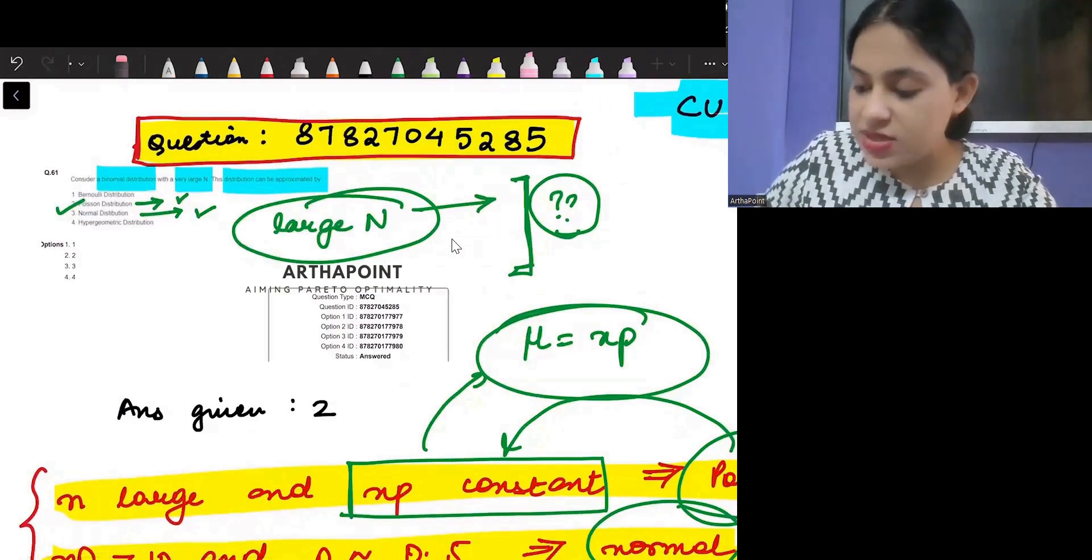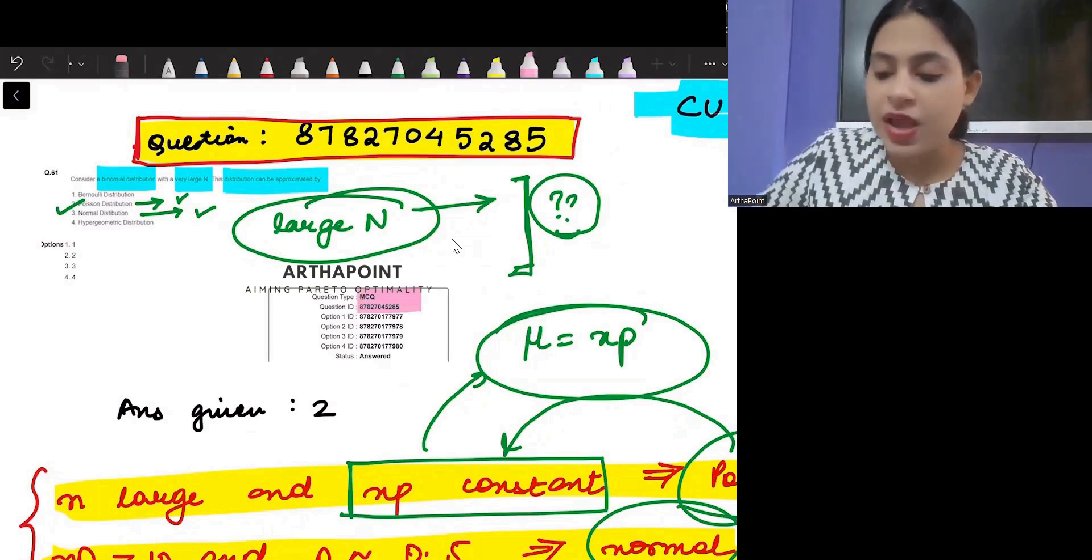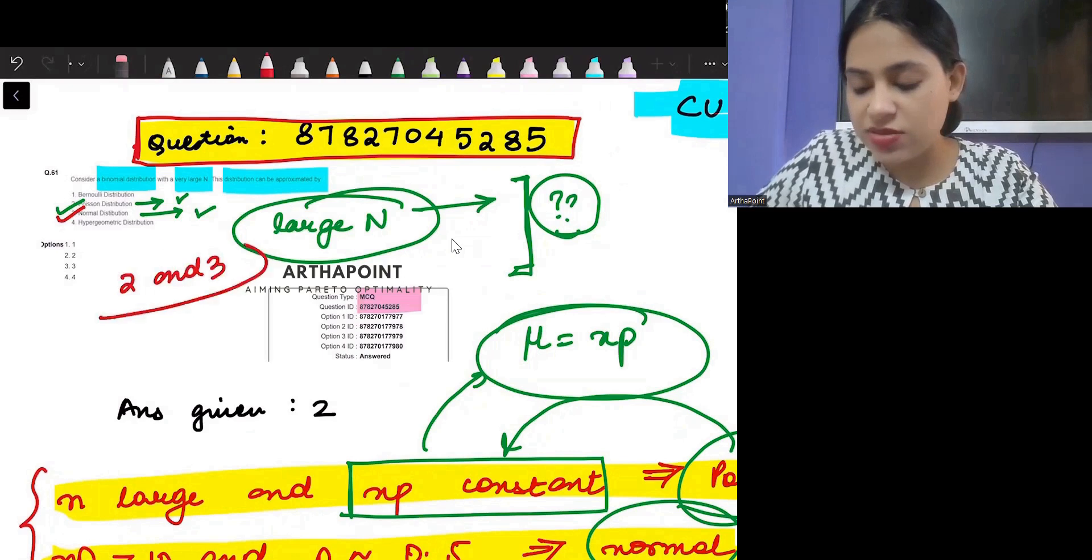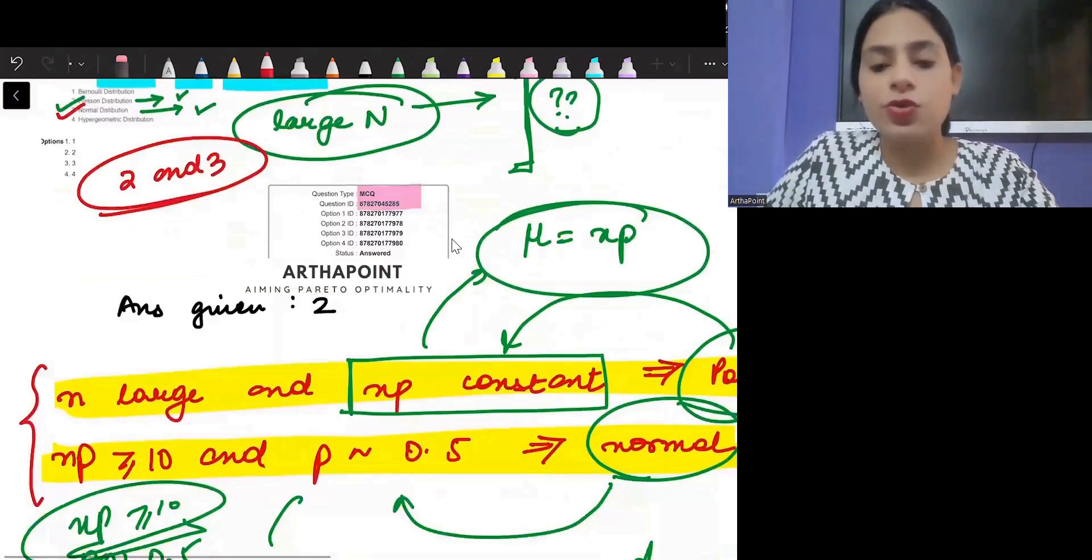So for the answer key 8-7-8-2-7-0-4-5-2-8-5, my claim for now is I feel that answer 2 and 3 are both correct options. Both of them make sense. Now to validate this thing, I can take you to Devore.